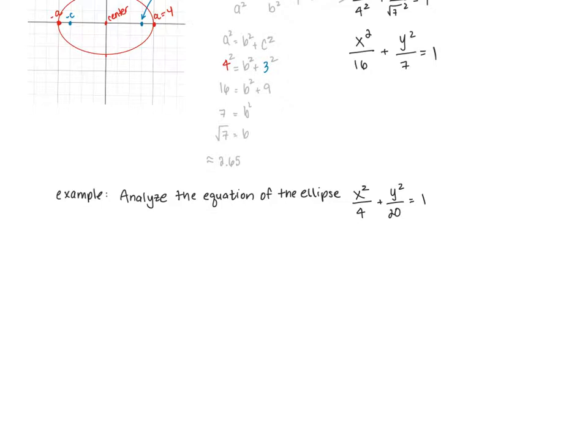Here's another example worded slightly different. In this example, we're given the equation of the ellipse instead of information about it. The equation is x squared over 4 plus y squared over 20 equals 1. What we notice is that the larger value is under y, so the orientation of this ellipse has its major axis along the y-axis.